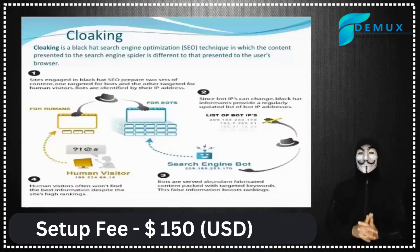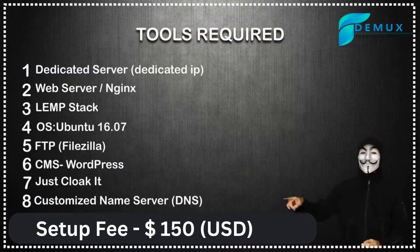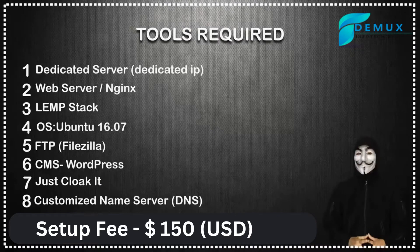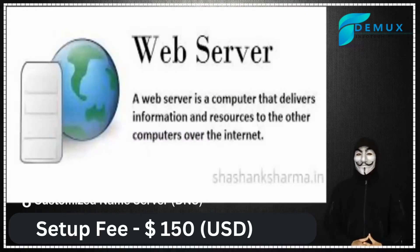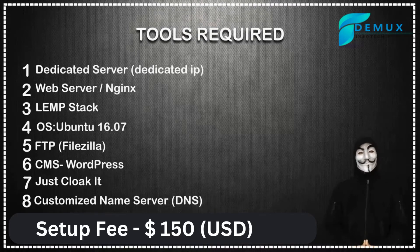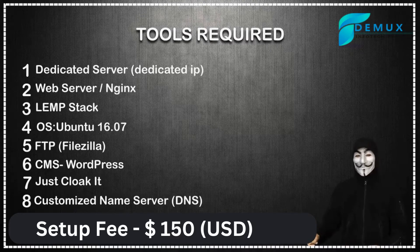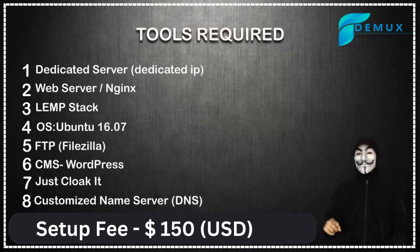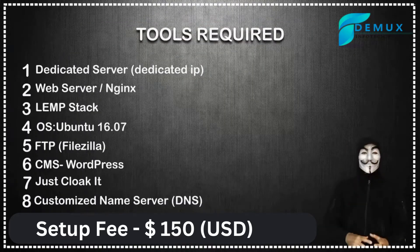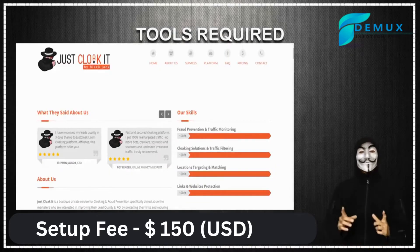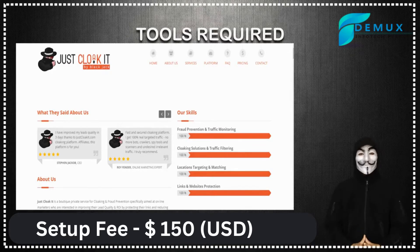The tools you'll need for JustCloakit or any cloaking software to work are: a VPS, which is a dedicated server — VPS stands for Virtual Private Server, you can get it from DigitalOcean or Vultr — and website hosting on that VPS. To control your VPS, you need a web server like NGINX or a LAMP stack. LAMP stands for Linux, Apache, MySQL, and PHP, running on Ubuntu. You'll also need FTP software like FileZilla or Cyberduck, a CMS like WordPress or a PHP/HTML site, the JustCloakit software itself, and a custom nameserver from Cloudflare.